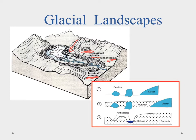Some of the other things we hear a lot about are kettle lakes. As the glacier is retreating, it's going to leave behind chunks of dead ice. These chunks are going to be buried down and create depressions, and as they melt they're going to form kettle holes, which will then fill in with water — and we call them kettle lakes.